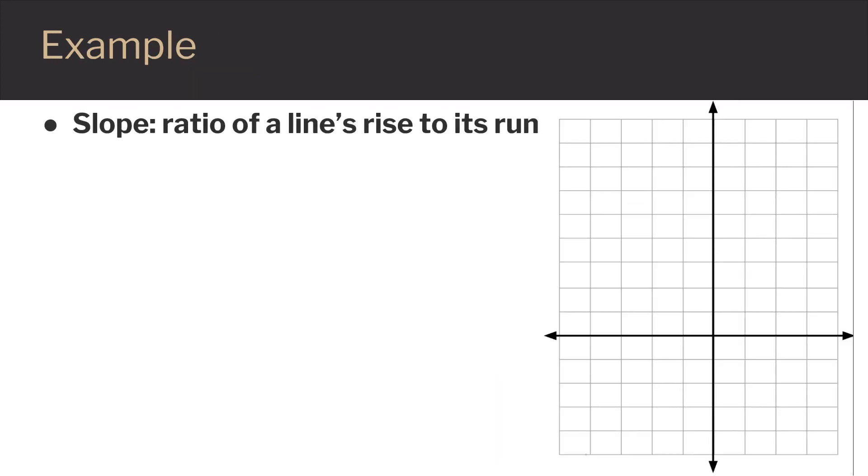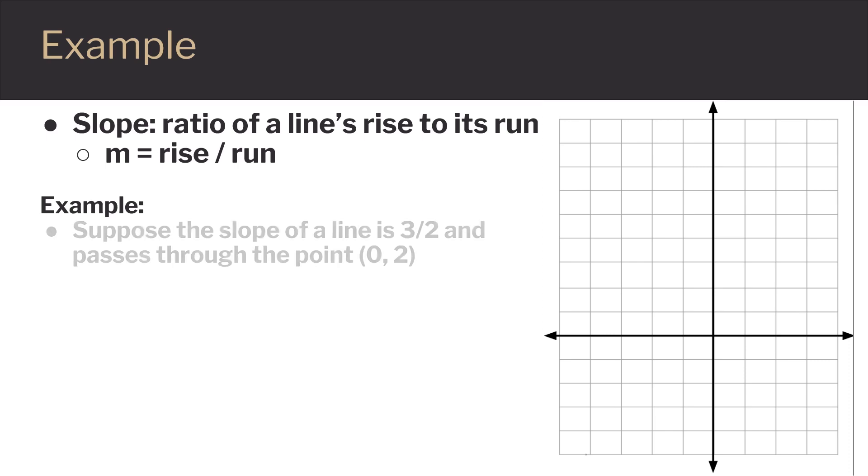Slope is the ratio of a line's rise to its run, so m equals rise over run. For example, suppose the slope of a line is 3 over 2 and passes through the point (0, 2).